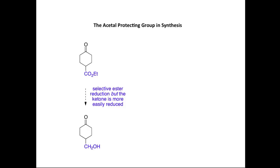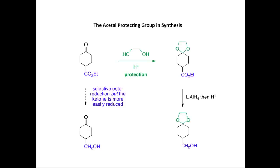So what I need to do is protect the Ketone. I'm going to react it with ethane-1,2-diol with an acid catalyst, just as we saw before, to introduce the Cyclic Acetal, which is shown here. This Cyclic Acetal does not react with lithium-aluminium hydride, so I can now add lithium-aluminium hydride, and following acidic workup, I form the primary alcohol and the Acetal remains intact.